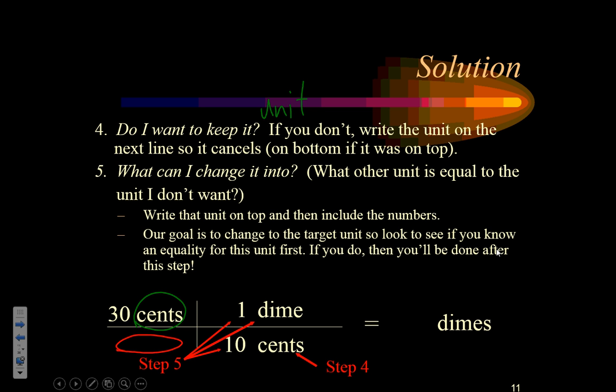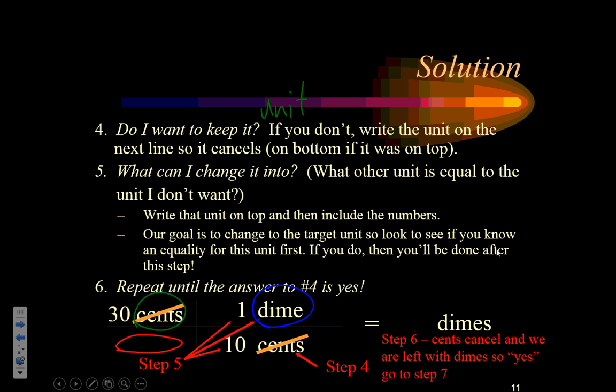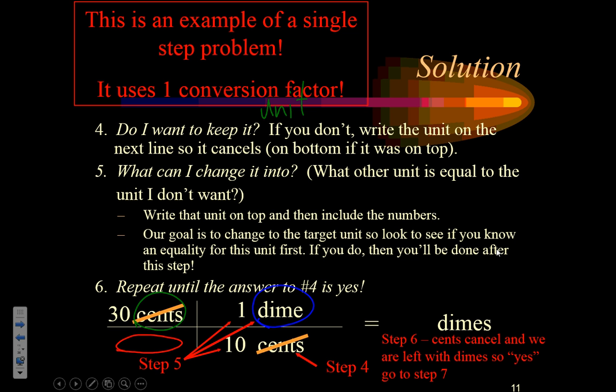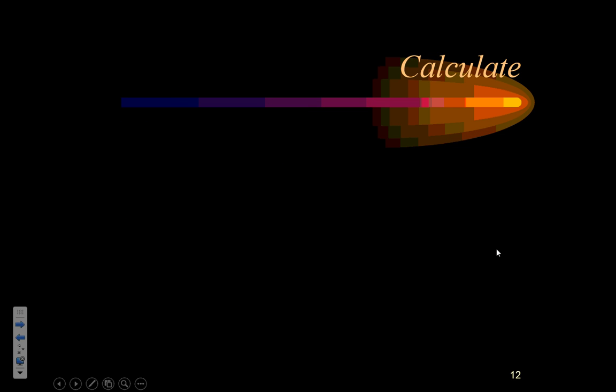So remember, our goal is to change the target unit, or change into the target unit. So always look ahead and ask yourself if you know an equality between the unit on the bottom and the target unit. If we do, put it on top, and you're going to be done in one step, just like we are in this case. Step six is repeat until the answer to number four is yes. So I go back to number four and I say, do I want to keep it? Well, I'm in dimes. So yeah, I want to keep it. So that means I move on to the calculation phase. My cents canceled, I'm in dimes, that's what I want. So that must mean this is my setup to solve this problem. So this is an example of what we call a single step problem. We used one conversion factor to convert from our given to our target. So when I talk about one-step or two-step or three-step problems, that's describing how many conversion factors it's going to take me to get from my start to my end.